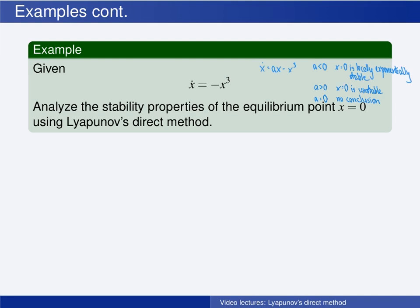Consider V(x) equals one-half x squared as the Lyapunov function candidate. The system may be interpreted as a mechanical system where x is the velocity and a non-linear friction acts on the system. No potential forces act on the system, so the system energy is the kinetic energy, which is one-half times the mass m, normalized to one, times v squared. This is our Lyapunov function candidate and one motivation for this choice.